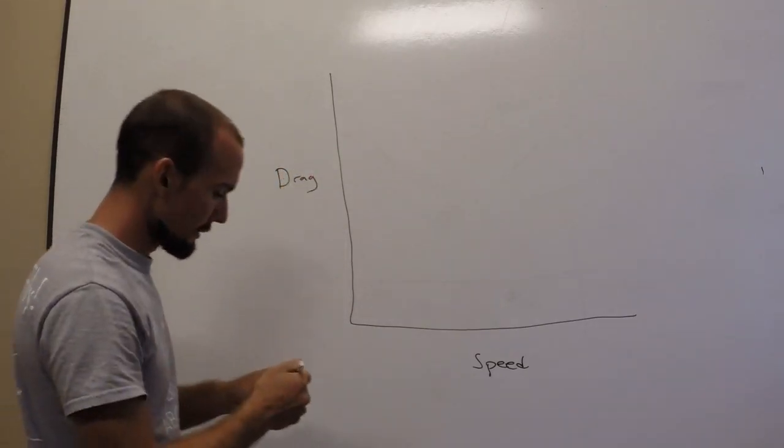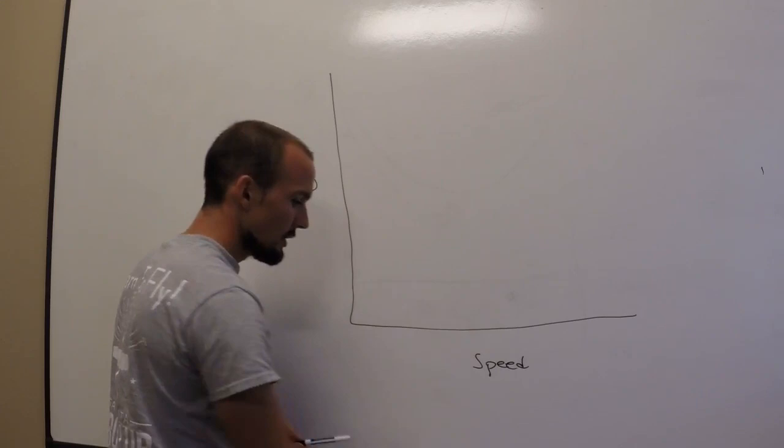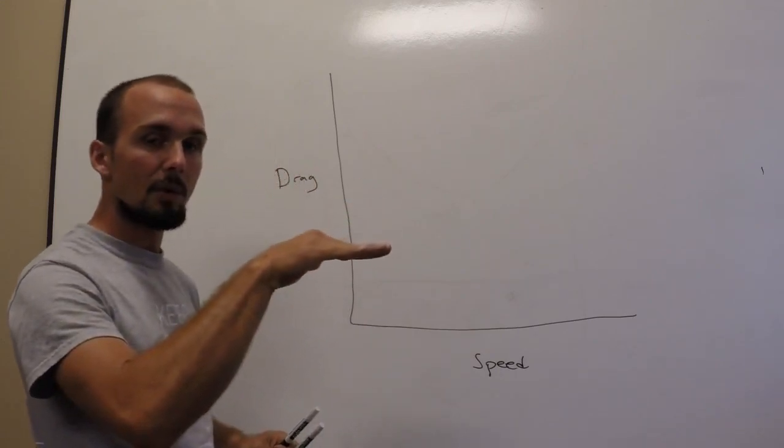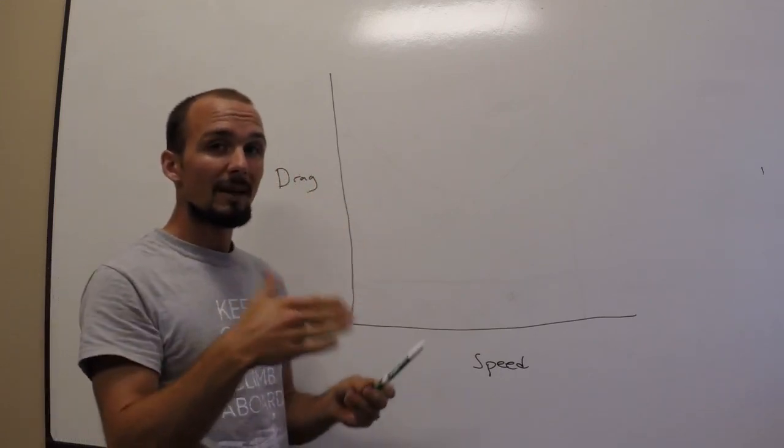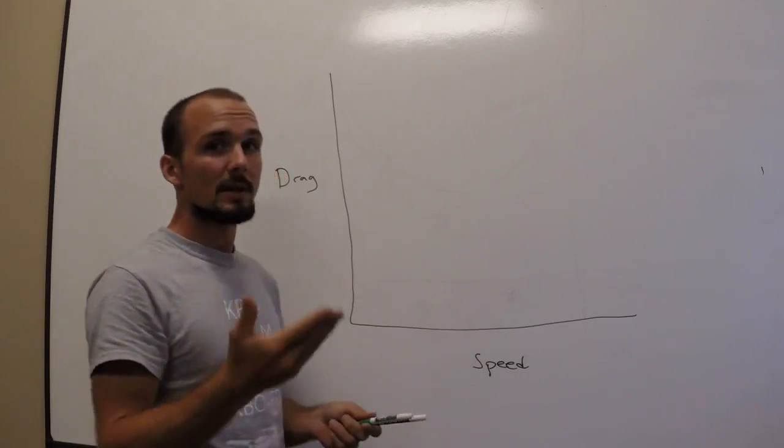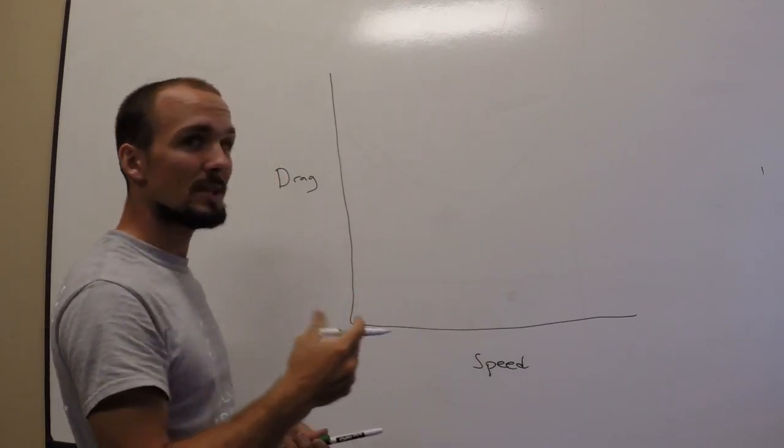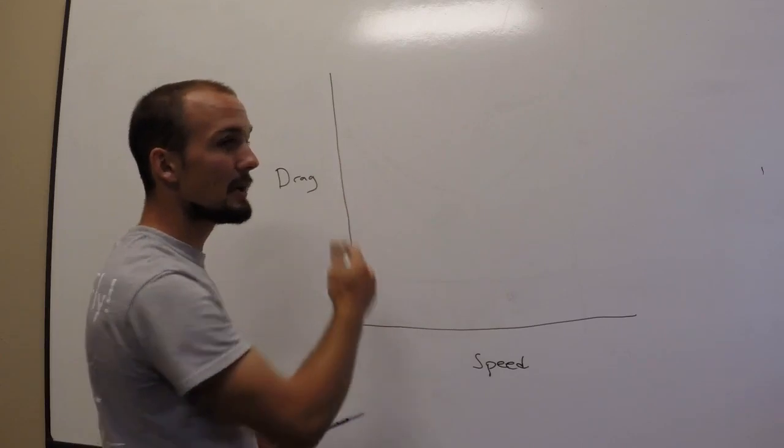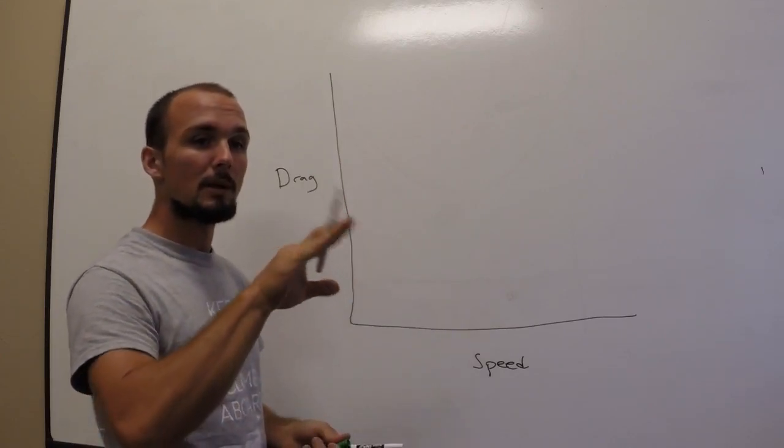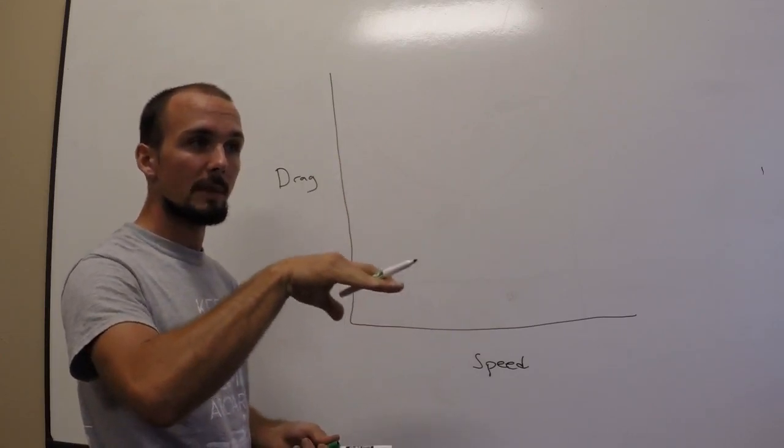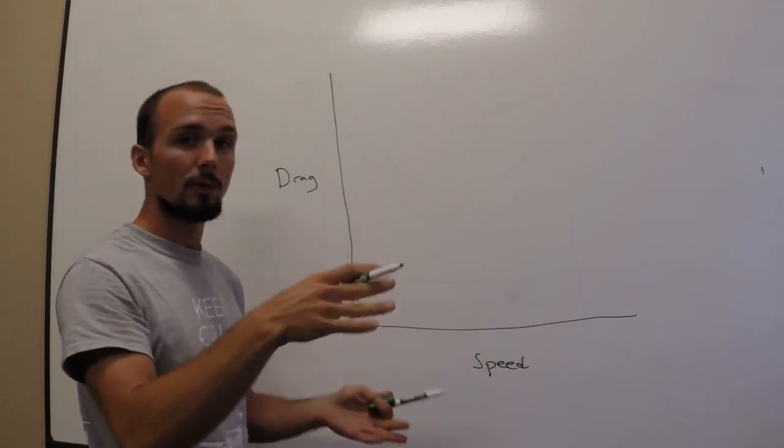As you might have already heard or might be able to guess, the faster we go, the lower angle of attack we need. We can lower our nose and we have less drag induced on us by lift. So our lift drag actually decreases as speed increases. Therefore, there's less drag.